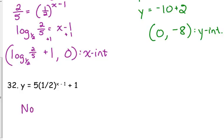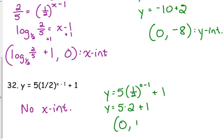So no x-intercept here but these do have y-intercepts. So plug in 0. So similar thing happens. We've got 0 minus 1 which is negative 1. 1 half to the negative 1 flips it over. So we get 0, 11 as our y-intercept.